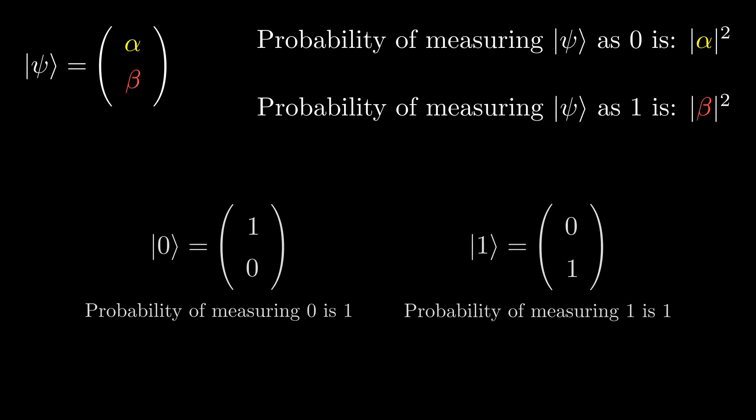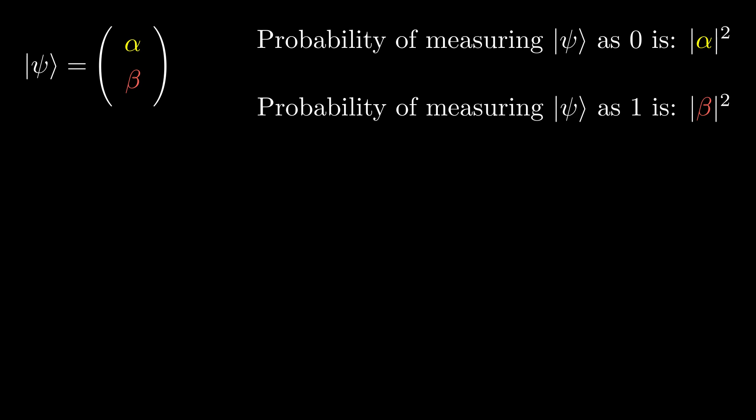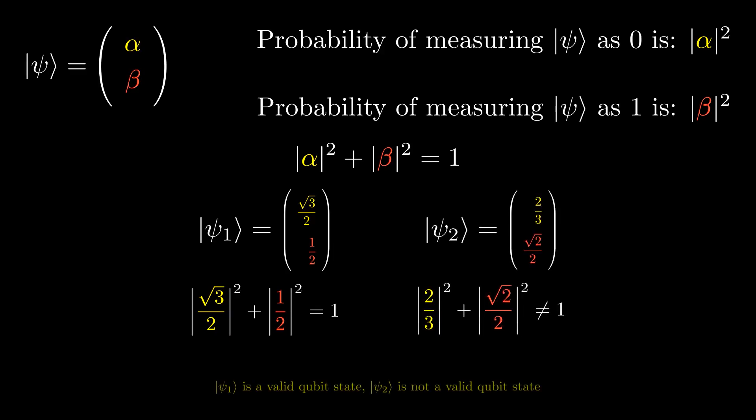Since there are only two possible outcomes when measuring a qubit, the probability of measuring a zero plus the probability of measuring a one must equal one, giving us this equation. So this would be a valid qubit state, since the probabilities add up to one. But this would not be, since the probabilities add up to more than one.